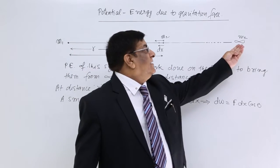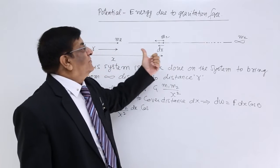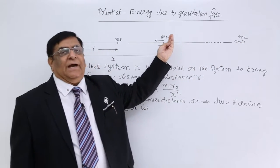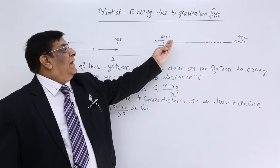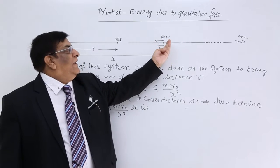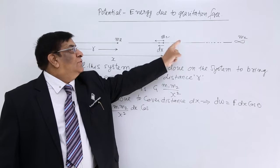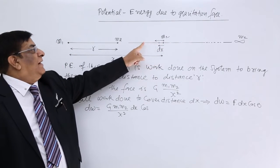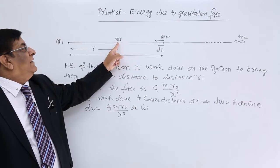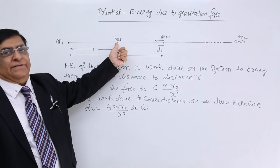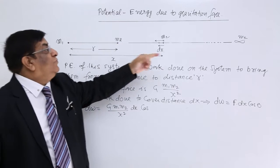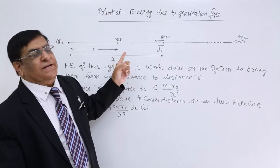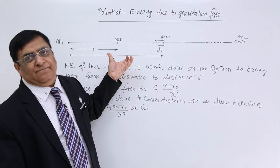From infinity, the gravitational force is allowed to bring M2 in this direction, and some work is being done. The object is attracted with the force, displacement is taking place. Force into displacement — work is being done. When it comes here, we lock it here. Whatever work is done up to this distance becomes the potential energy of this system.